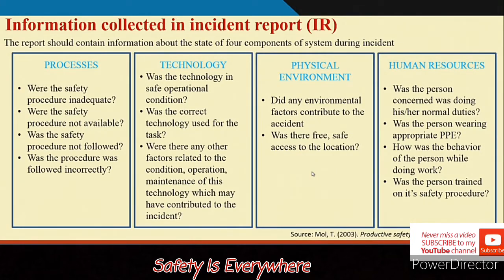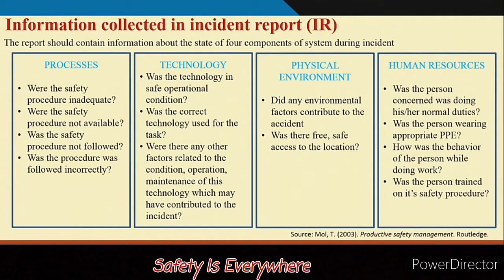The information collected during investigation can be classified primarily into four areas: process related, technology related, physical environment related, and human resource related — as enlisted in Tania Moll's book on productive safety management. This is not an exhaustive list; you may have your own way of doing things. Process-related questions include: were safety procedures adequate, were they not available, were they not followed, or were they followed incorrectly?